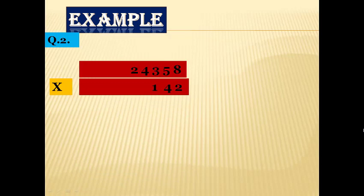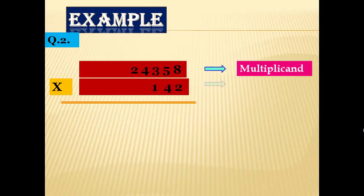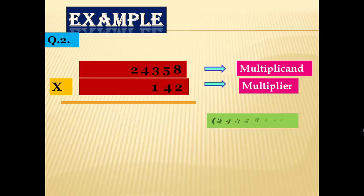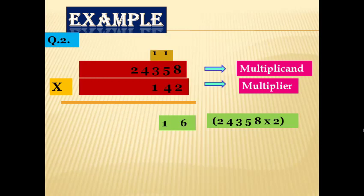Example number two: Multiply 24,358 by 142. In this example, 24,358 is the multiplicand and 142 is the multiplier. First we multiply 24,358 by 2 (ones place): 2 × 8 = 16 — 6 placed, 1 carried; 2 × 5 = 10 + 1 carry = 11 — 1 placed, 1 carried; 2 × 3 = 6 + 1 carry = 7; 2 × 4 = 8; 2 × 2 = 4.